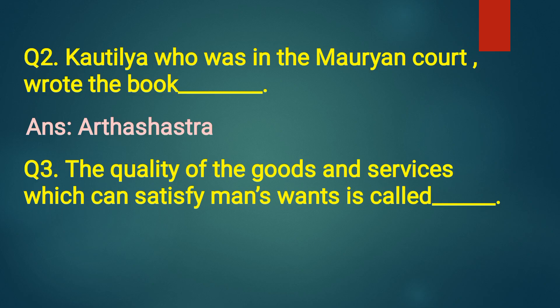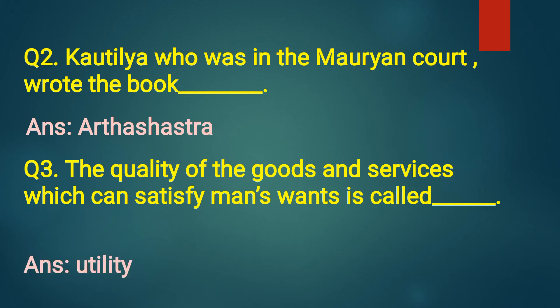Question number 3: The quality of the goods and services which can satisfy man's wants is called dash. Answer: Utility. The quality of the goods and services which can satisfy man's wants is called utility.